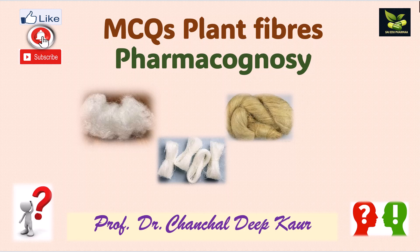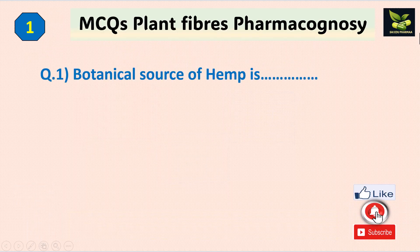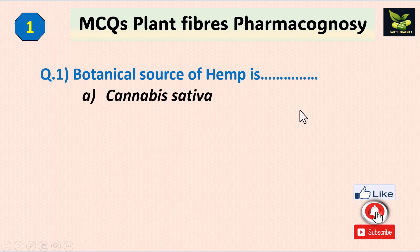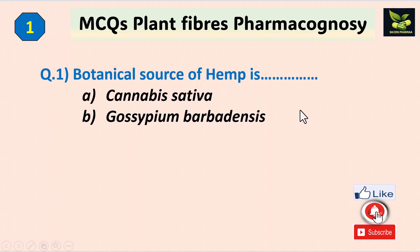Good morning and welcome to our YouTube channel SciAview Pharma. We are going to discuss MCQs related to plant fibers and animal fibers from the pharmacognosy subject. Question one: what is the botanical source of hemp? Options are Cannabis sativa, Gossypium barbadensis, Linum usitatissimum, or Corcorus capsularis.